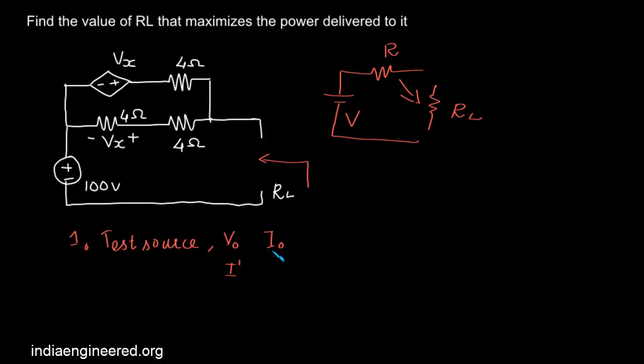If we put a current source, we have to find out the voltage across it in order to find out the Thevenin's resistance.